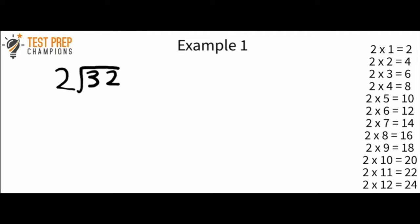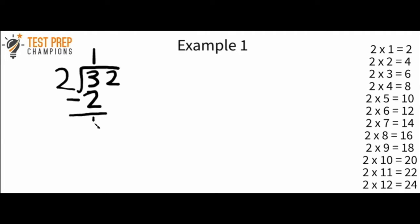So let's go over how to do this. The first thing I want to ask is I want to take the 2 and look at the 3. I want to think, how many times will 2 go into 3? I can see that 2 times 1 gives me 2. So 2 goes into 3 one time. Now I want to take 2 and multiply it by 1. 2 times 1 is just 2, so I put a 2 right here. Now I want to do a subtraction — just 3 minus 2, which is just 1.